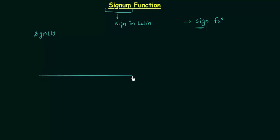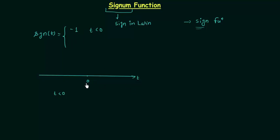I will first draw the number line. Let's say this is 0. When t is negative, meaning when t is less than 0, the sign of numbers will be negative, and the signum function is equal to minus 1. When t is equal to 0, there is no sign, so signum function is simply equal to 0. When t is greater than 0, numbers will have positive sign, so the signum function is equal to 1, representing the sign of numbers.